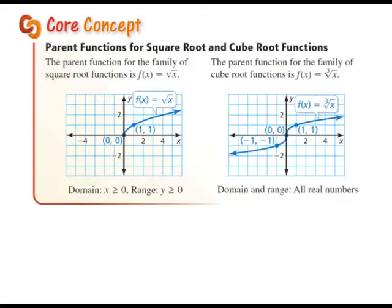So what that leads us into is graphing square root and cube root functions. If you look at a square root, it kind of looks like a ray. The parent function for a square root begins at (0, 0) — that's where our vertex or endpoint would be — and then it goes up and to the right through (1, 1). A square root is different than a cube root because we can actually take cube roots of negative numbers. That's why the cube root looks like a propeller, because we can have both positive and negative numbers.